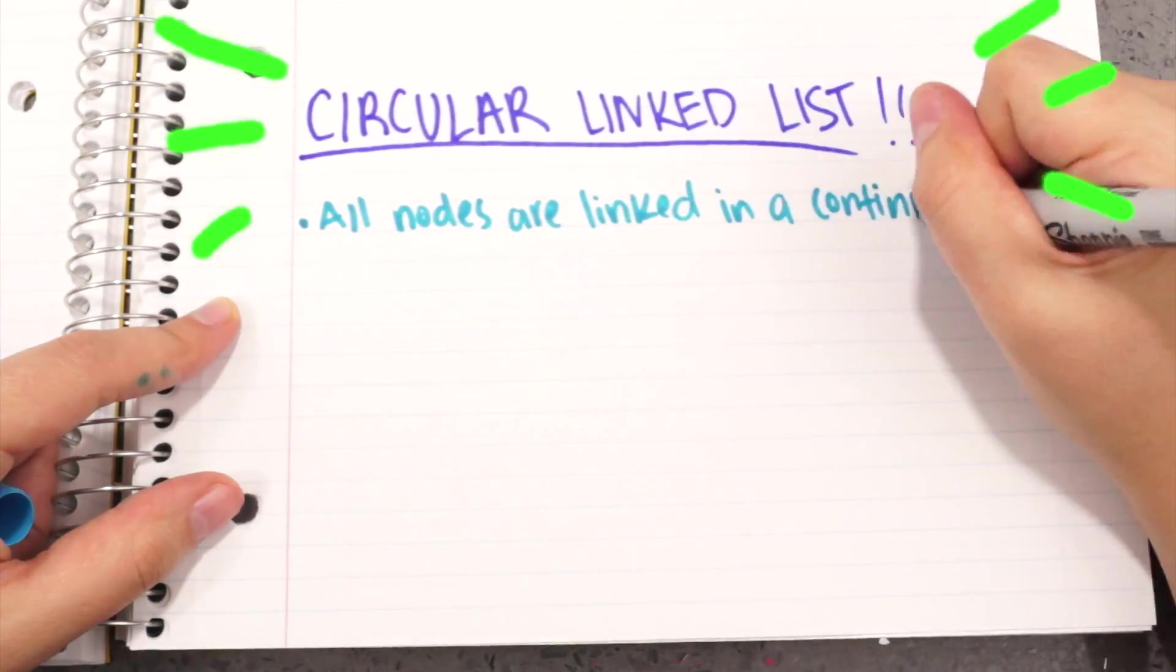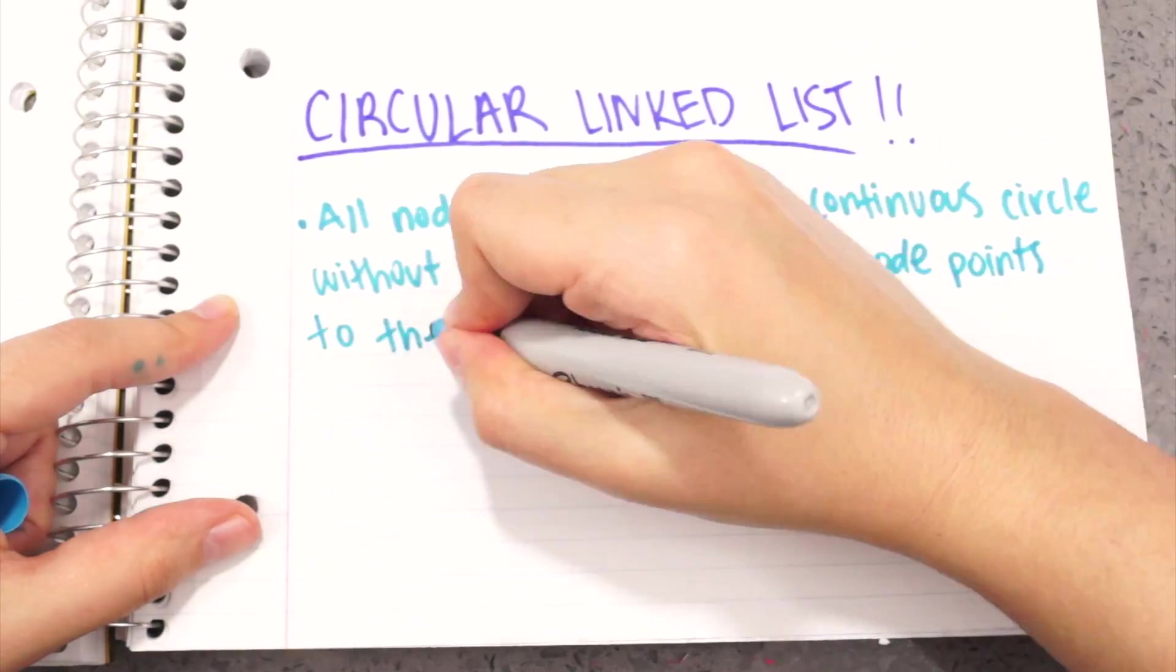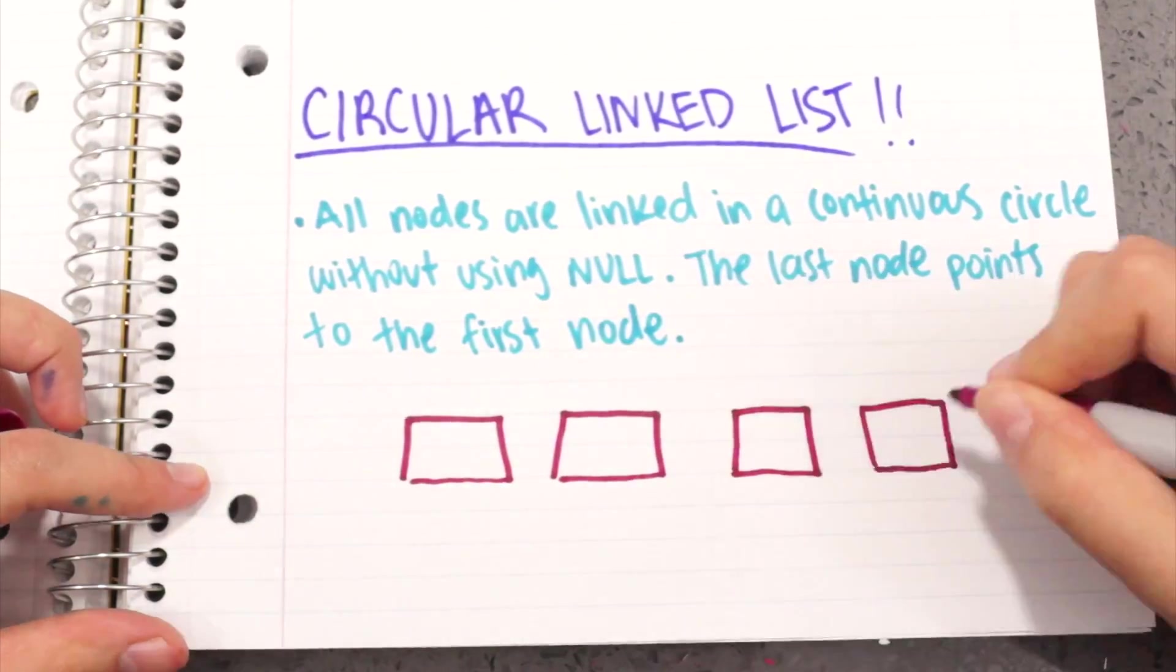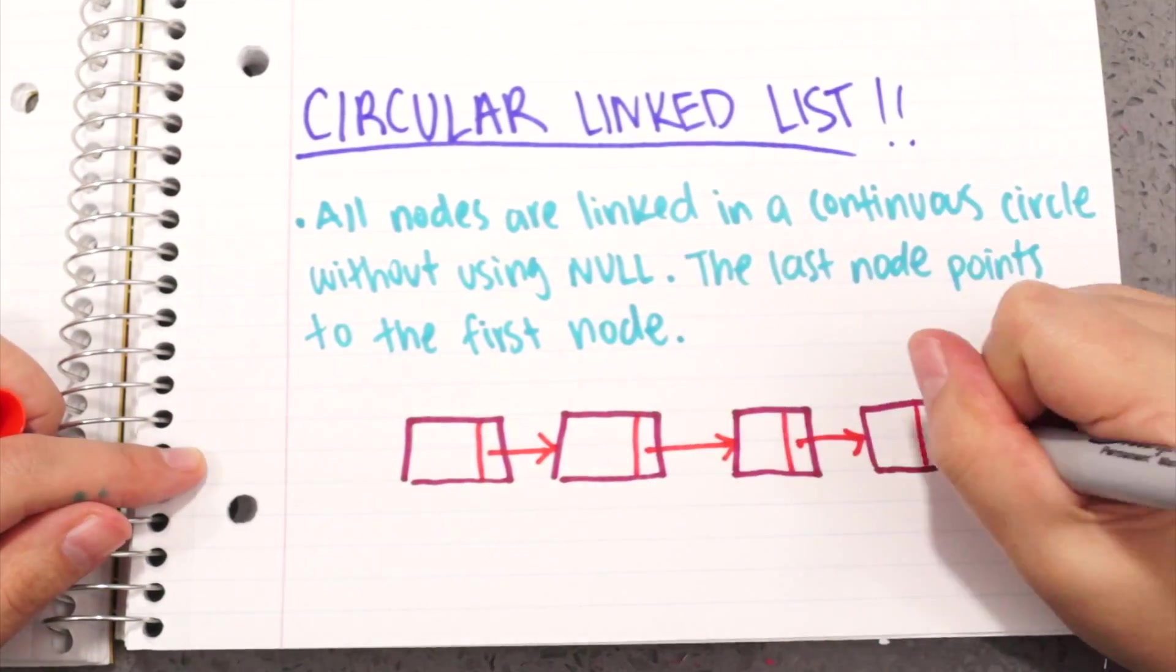Another variation is a circular linked list. In this list, all the nodes are linked in a continuous circle, and the last node points to the first node.